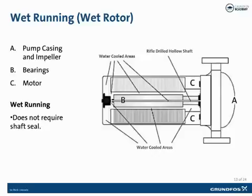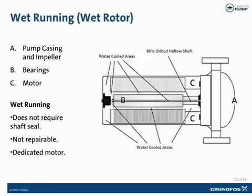Since the wet rotor pump is a one-piece pump, repair is not practical. The motor is dedicated and designed for a particular casing, so a motor exchange is not possible. One-piece pumps are usually less expensive than three-piece pumps, and if a failure occurs, the pump is usually replaced rather than repaired. One-piece pumps are now also available with integrated variable speed drives and sensors, making them very application-flexible and cost-effective when considering operating costs.